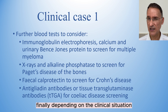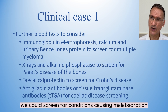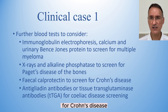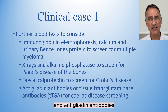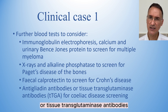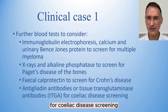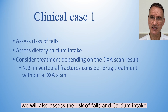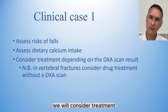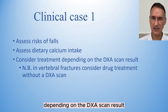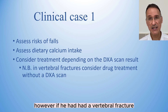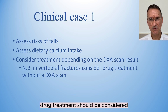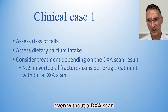Depending on the clinical situation, we could screen for conditions causing malabsorption such as checking fecal calprotectin for Crohn's disease, and anti-gliadin antibodies or tissue transglutaminase antibodies for celiac disease screening. We will also assess risk of falls and calcium intake. We will consider treatment depending on the DEXA scan result; however, if he had had a vertebral fracture instead of a Colles fracture, drug treatment should be considered even without a DEXA scan.